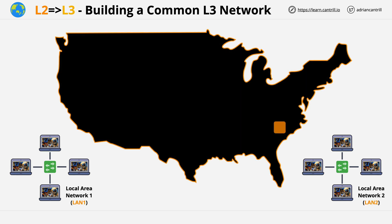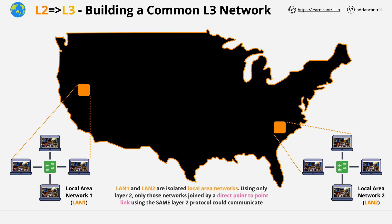Let's say that one is on the east coast of the US, and another is on the west coast. So there is a lot of distance between these 2 separate layer 2 networks.